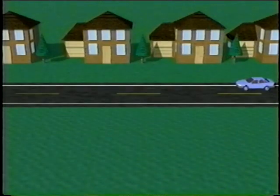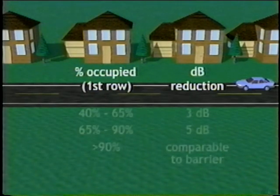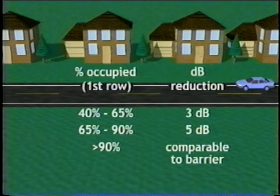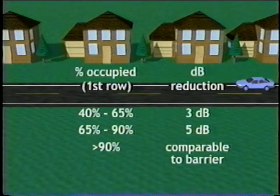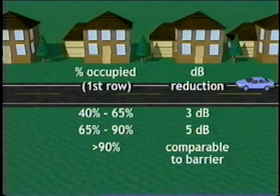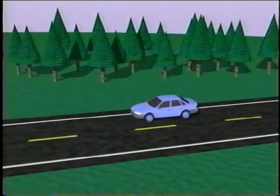To get an idea of how gaps or openings between buildings in a row can affect insertion loss: if 40 to 65% of the first row is occupied by buildings, the expected insertion loss will be about 3 dB. For 65 to 90%, the insertion loss will be about 5 dB. For percentages greater than 90, the buildings will provide attenuation comparable to that of a barrier of similar height. In addition to constructed noise barriers and rows of buildings, areas of dense foliage can provide attenuation.